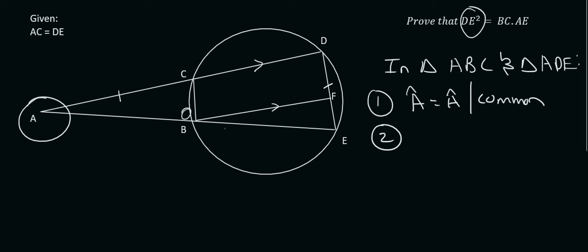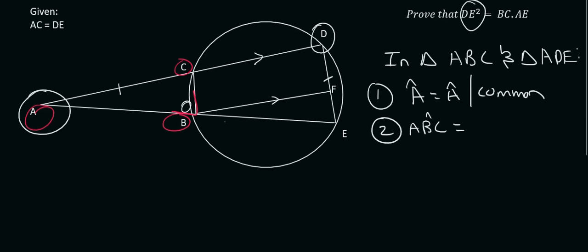We can say that this angle here—please don't say B1 or B2, use the following rather—we can use ABC with a little hat on top of the B. So angle ABC should be equal to angle D. We can just say D because it's obvious which angle we're talking about. The reason for that is exterior angle of cyclic quad.